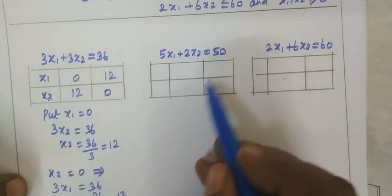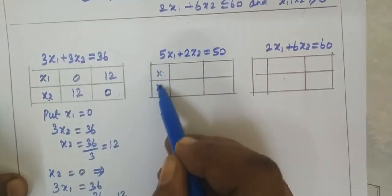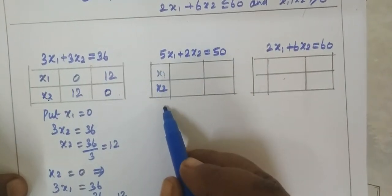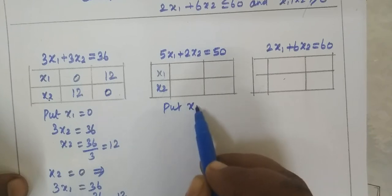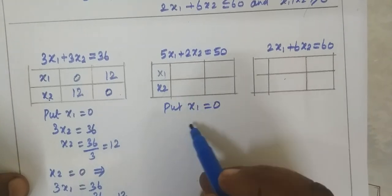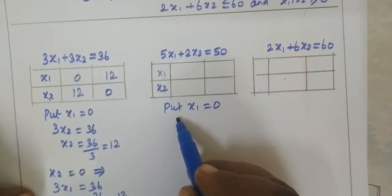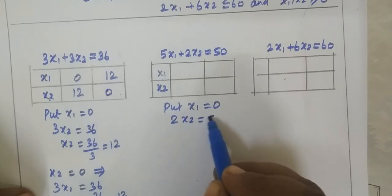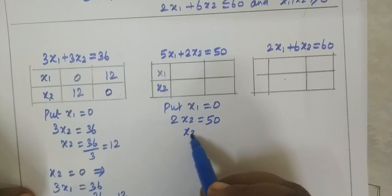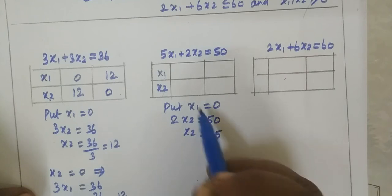Second equation: 5x1 plus 2x2 equal to 50. First, put x1 equal to 0 and substitute. Then 2x2 equal to 50, therefore x2 equal to 25. So the first intercept point is (0, 25).